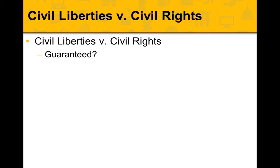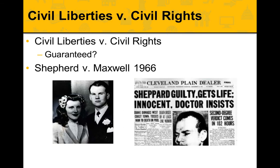There's a court case where this is really played out: Shepard v. Maxwell from 1966. The defendant, Mr. Maxwell, was on trial for second-degree murder for the bludgeoning death of his pregnant wife. He was found guilty but appealed on the grounds that he had an unfair trial. He alleged that the trial judge failed to protect him from the massive, widespread, and prejudicial publicity that accompanied his trial.